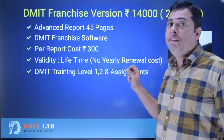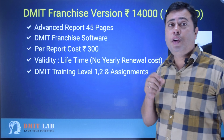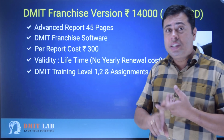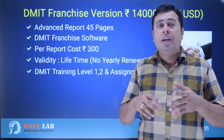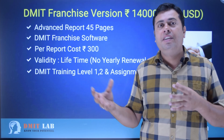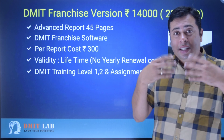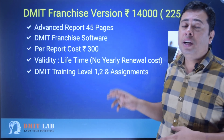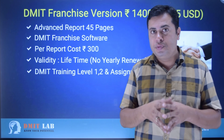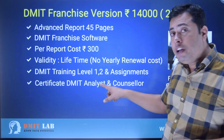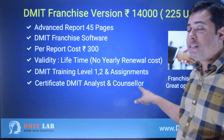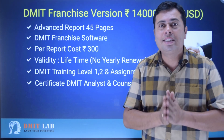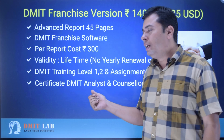GMIT training comes with level one and level two, along with assignments of 10 reports. We teach you how to scan, analyze, and understand the report, how to do counseling for different age groups, what the DMRT science is, how to answer customer questions, and how to market as well. You also receive a DMRT analyst and counselor certificate based on an online examination.